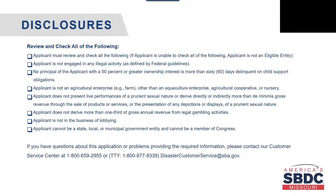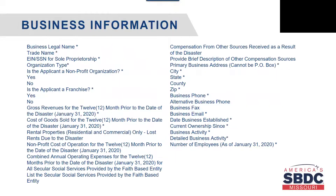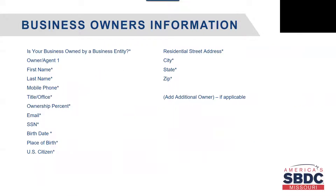You will not be able to proceed with the application if you have not checked all of these boxes. Moving on to business information, here on the screen you will notice all of the different items that will be requested on the business information page. Those items with an asterisk are required. Once completing all of this information, you will continue on to the business owner information.